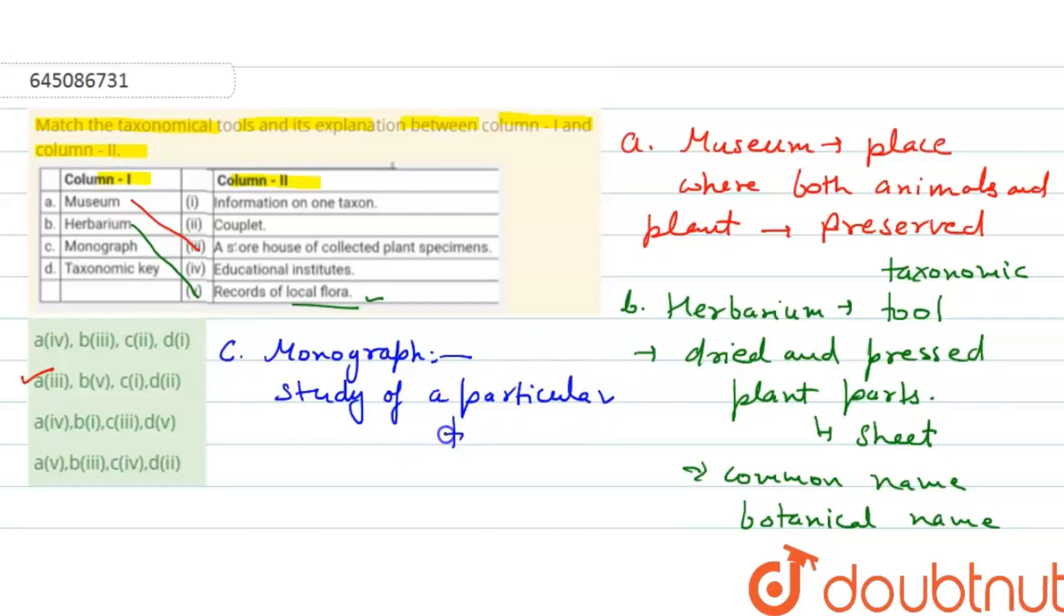Monographs try to review all the facts about the taxonomic group - that is species descriptions, morphology, their phenology, ethnobotany, distribution, common names, etc. So that matches with the first option, that is information on one taxon. And the last option is taxonomic key.